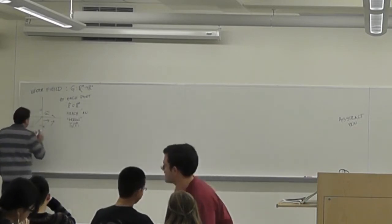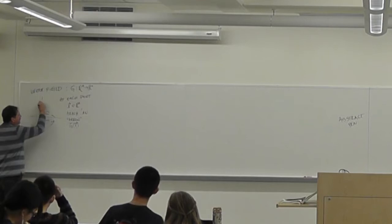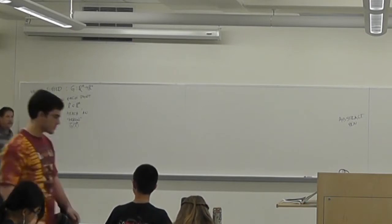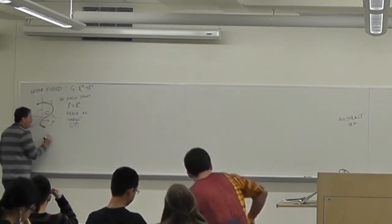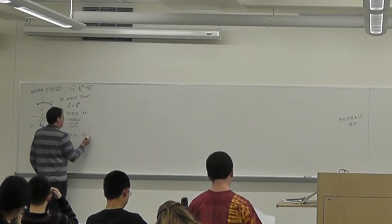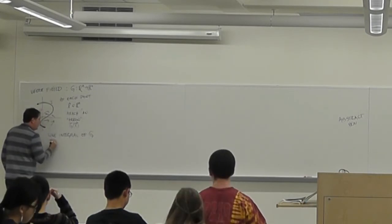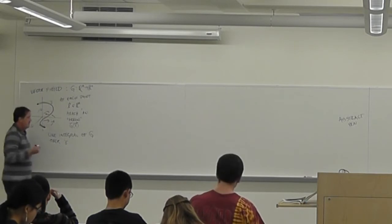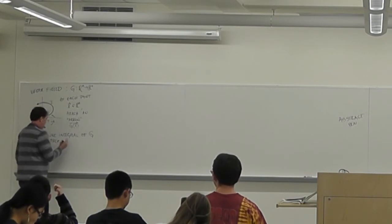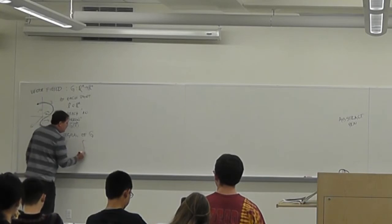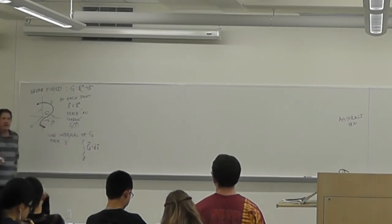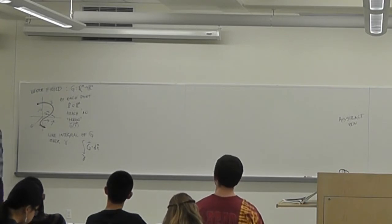And then we have also maybe some path. We have some path gamma, and we can make sense of the line integral of g over the curve gamma, which is the integral of g dot dx. So we can write it that way.